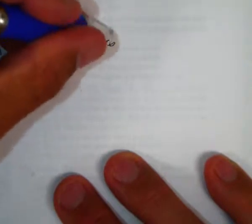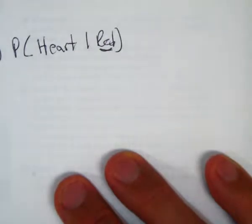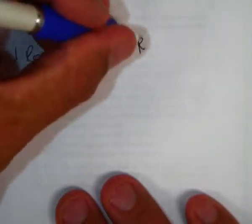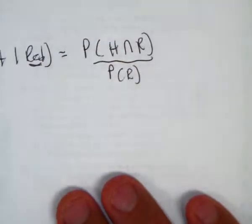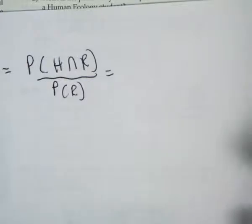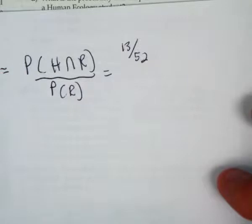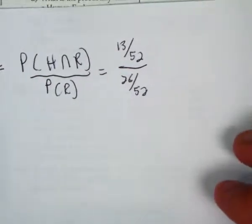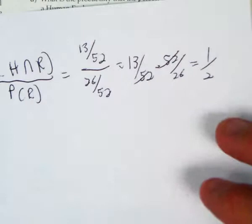The probability it's a heart given that it's red. There are actually two ways to do this. The rule says we would do the probability of a heart and red over the probability that it's red. The probability that it's a heart and red — there are 13 cards out of 52 that are hearts and red. The probability of a red card is 26 out of 52. So we do keep, change, flip: 13 out of 52 times 52 over 26, and we wind up with 13 over 26, which is 1 half.